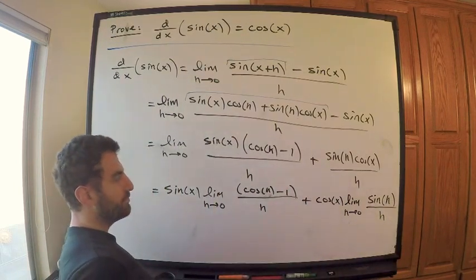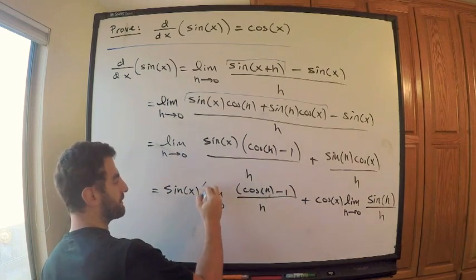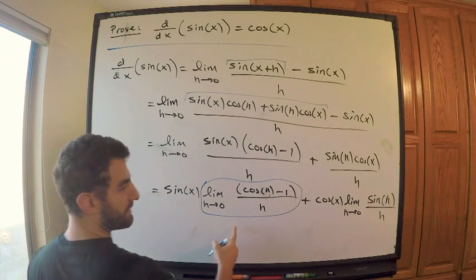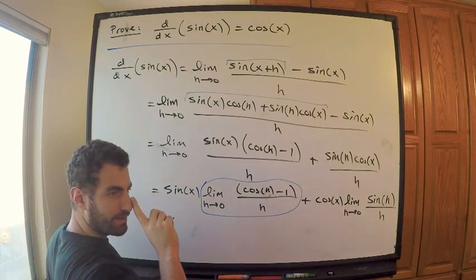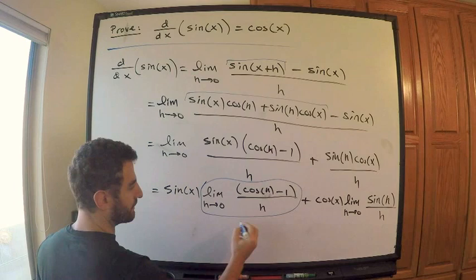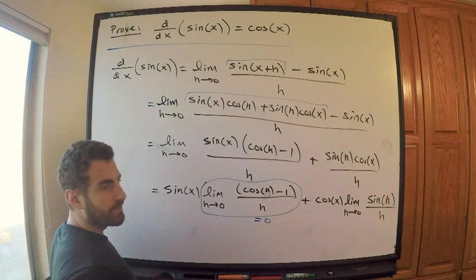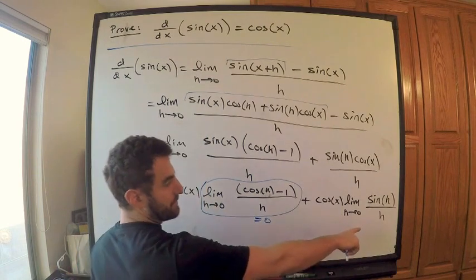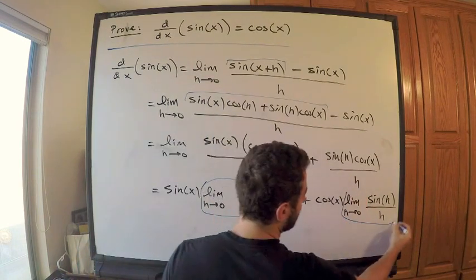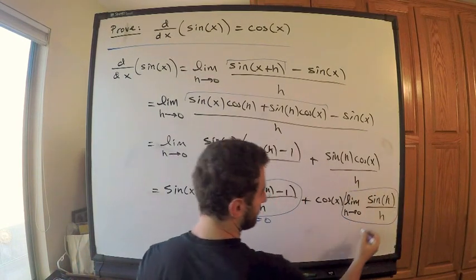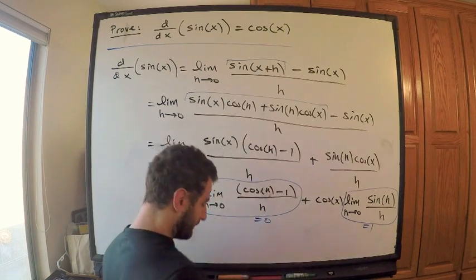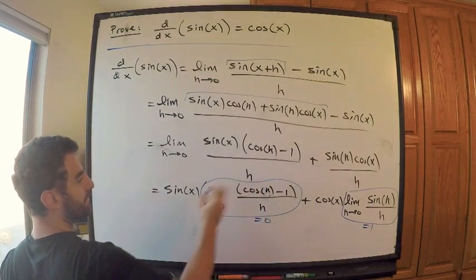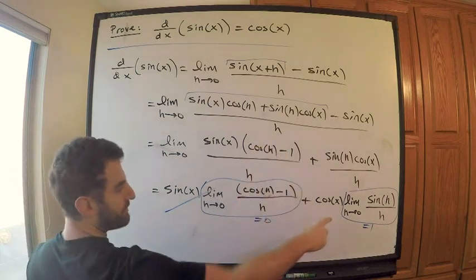These are the two important limits you need to know if you're taking a Calculus 1 course. The limit of cosine h minus 1 over h as h tends to 0 — give you a second to think about it — it's 0, that's right, it equals 0. Later on I'll use L'Hôpital's rule to show that it's true. This other one — the limit of sine h over h — this is even more important, and it equals 1.